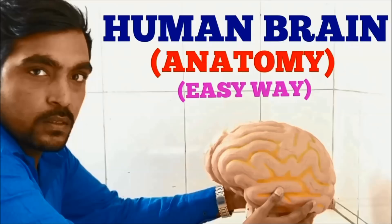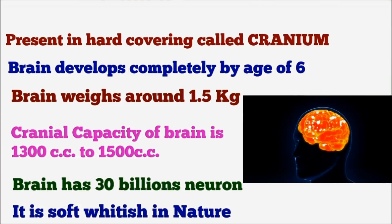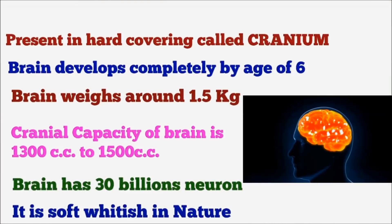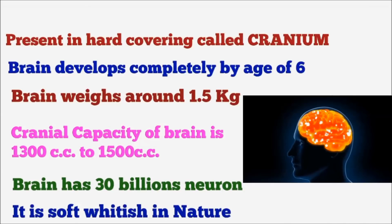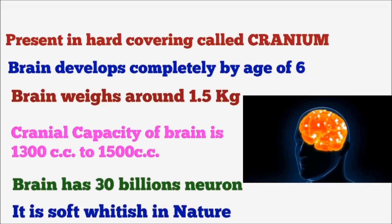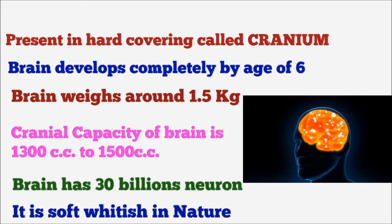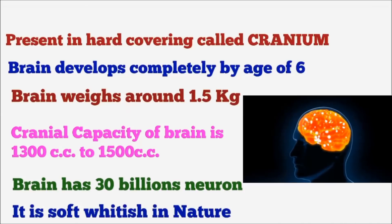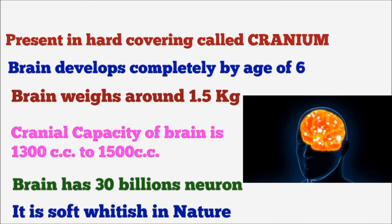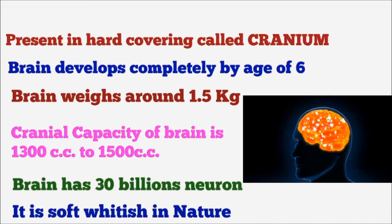I am talking about human brain anatomy. The brain is present in the cranium, which we call the skull. The brain grows in size in the cranium — by age 6, the brain weighs 1.5 kg, which is the cranium capacity. The brain has 30 billion neurons and is of soft, whitish nature.